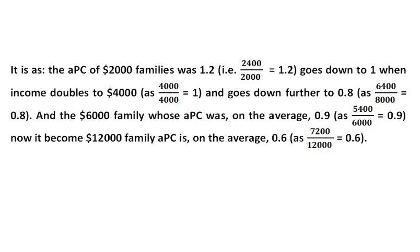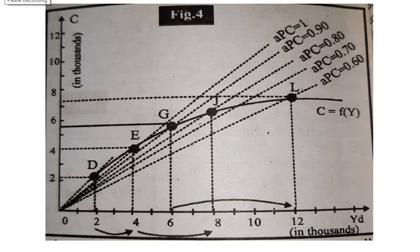It means that the families at three income levels mentioned above would move along the family consumption curve from D to E, where the APC falls from 1.2 to 1, from E to J where the APC falls from 1 to 0.8, and from G to L where the APC falls from 0.9 to 0.6 respectively.